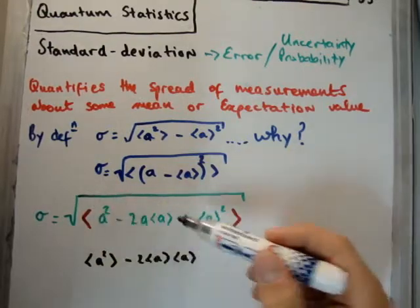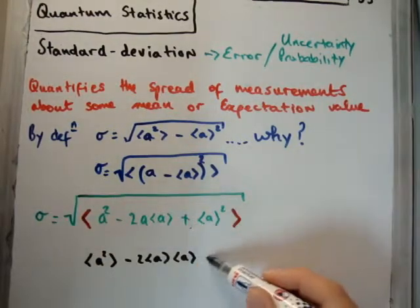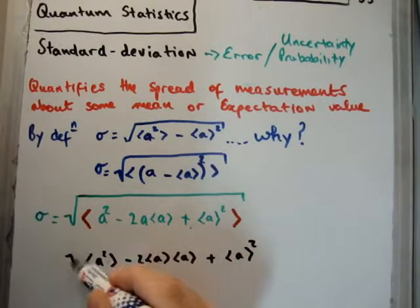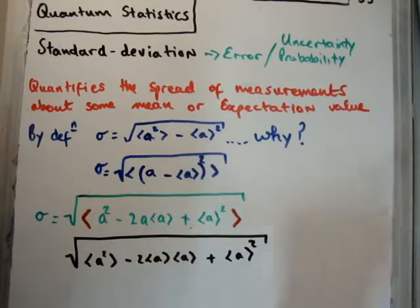And we're going to have this here, okay? And we get our square root as normal. Alright?